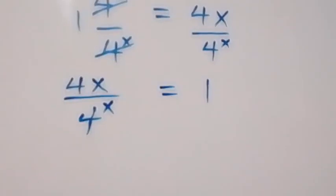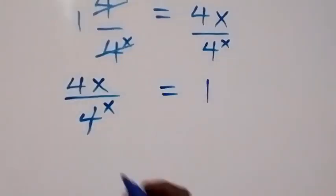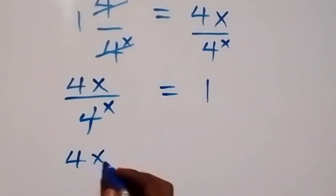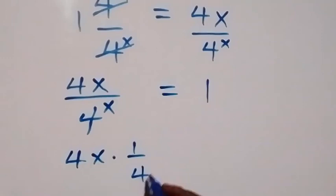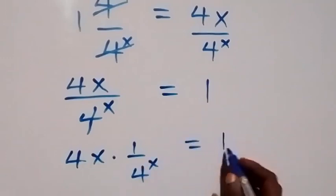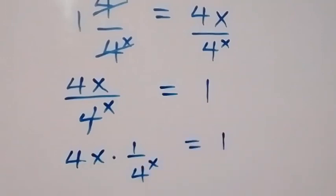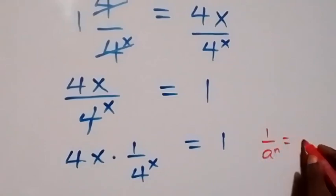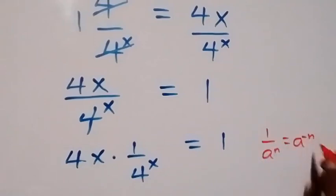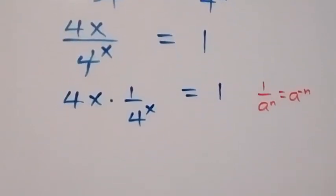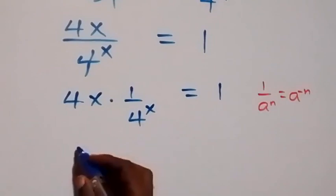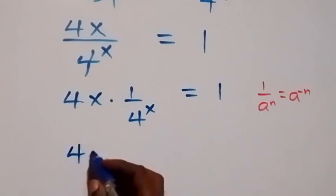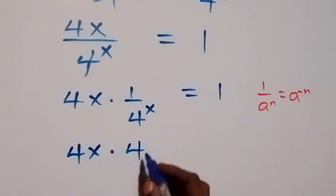Then, what we have here is writing this as 4x times 1 over 4 raised to power x, equals to 1. From the law of indices, 1 over a raised to power n is the same as a raised to power minus n. So here we can write 1 over 4 raised to power x as 4 raised to power minus x, and this gives us 4x times 4 raised to power minus x.